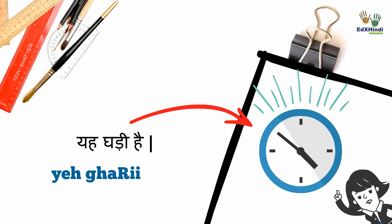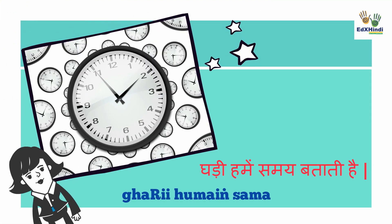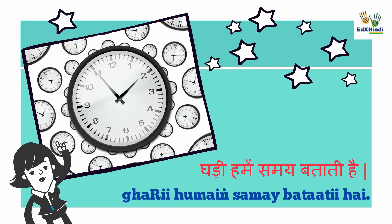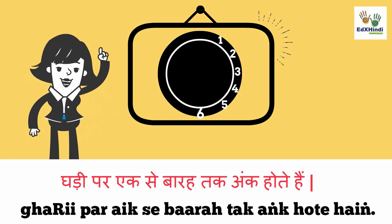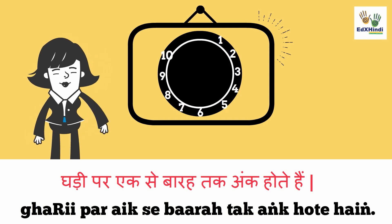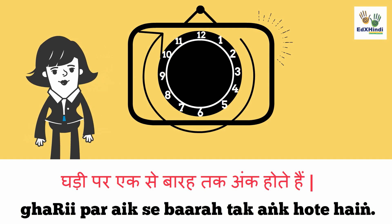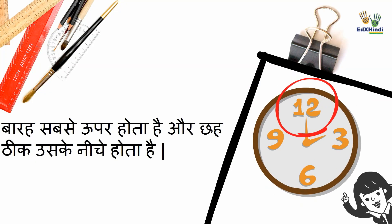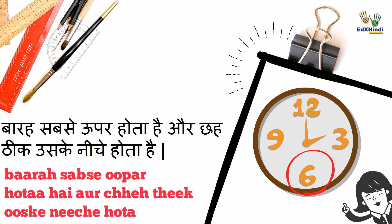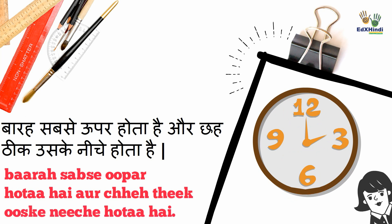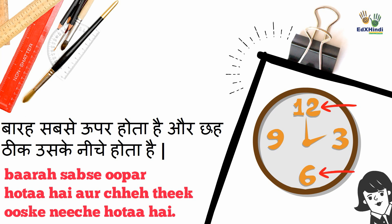Ye ghari hai. This is a clock. Ghari humein samay batati hai. A clock tells us the time. Ghari par ek se barah tak ankh hoti hai. On the clock, you can see the numbers from 1 to 12. Barah sab se upar hota hai aur chhe thik uske neechay hota hai. Number 12 is on the top and number 6 is right at the bottom.